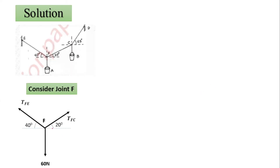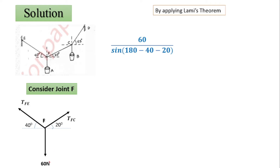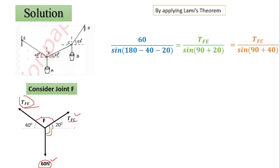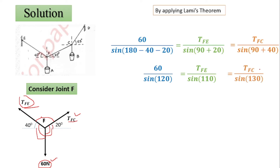Consider joint F and draw its free body diagram, then apply Lamy's theorem starting with the known force of 60 Newton. The remaining two forces are TFE and TFC; the angle between them is 180 minus 40 minus 20, which equals 120 degrees. For force TFE, the remaining two forces are 60 Newton and TFC; the angle between them is 90 plus 20, which equals 110 degrees. For force TFC, the remaining two forces are TFE and 60 Newton; the angle between them is 90 plus 40, which equals 130 degrees. So we get: 60 divided by sine 120, TFE divided by sine 110, and TFC divided by sine 130.